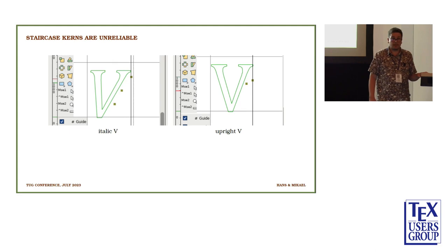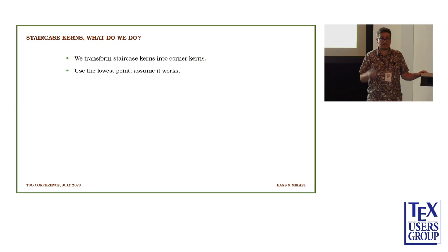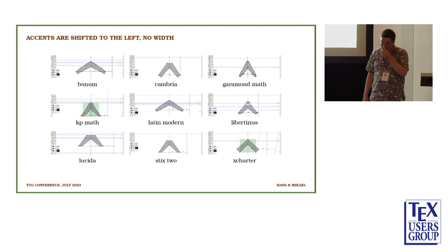As I said, there are different types of kerns. There are these staircase kerns. I don't know if you have seen this booklet by Microsoft. Not many fonts have them. It can look like this. This is Cambria, by the way. It can be very inconsistent. This is italic V and the upright V. So we more or less decided that we ditch this staircase kerns. It's not in many fonts and it doesn't really make a big difference.